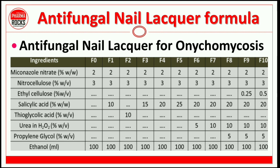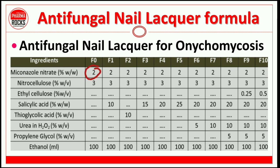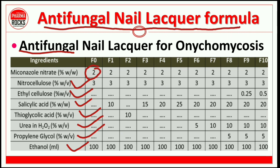In addition, nail lacquer preparations can also be made for fungal infections like onychomycosis. In the treatment of such conditions, we can prepare antifungal nail lacquer preparations by using drugs like miconazole nitrate. Only an extra drug is added to the preparation; the rest of the composition — nitrocellulose, ethylcellulose, salicylic acid, thioglycolic acid, urea, propylene glycol, and ethanol — remains the same. You simply add the antifungal drug to this type of antifungal nail lacquer preparation.